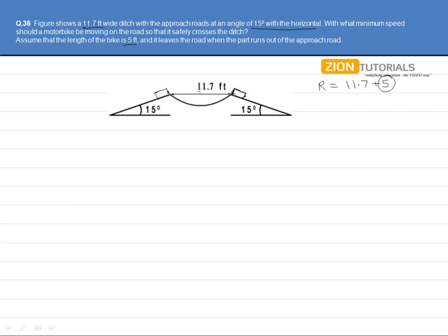Adding up the distance becomes this 11.7 and this, that is 5. You can also consider the back one point. It is covering the 5 over here and then the 11.7 and no further distance.